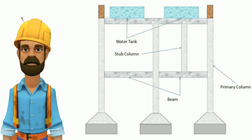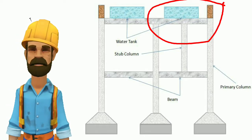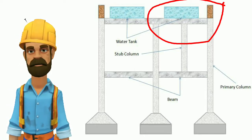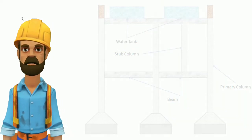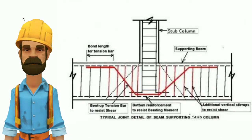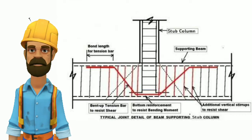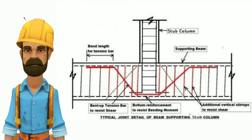In design of structure, stub column is used to support the water tank that is situated at the top of the building. Stub column is used to support the staircase landings. It is also used to transfer the load from secondary beam to primary beam.